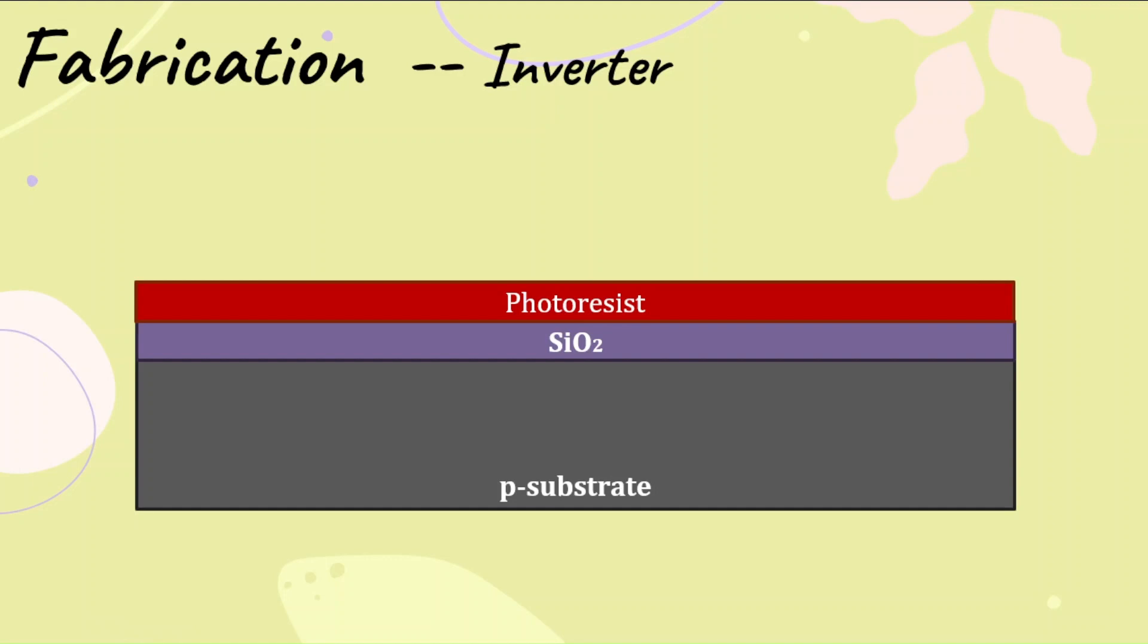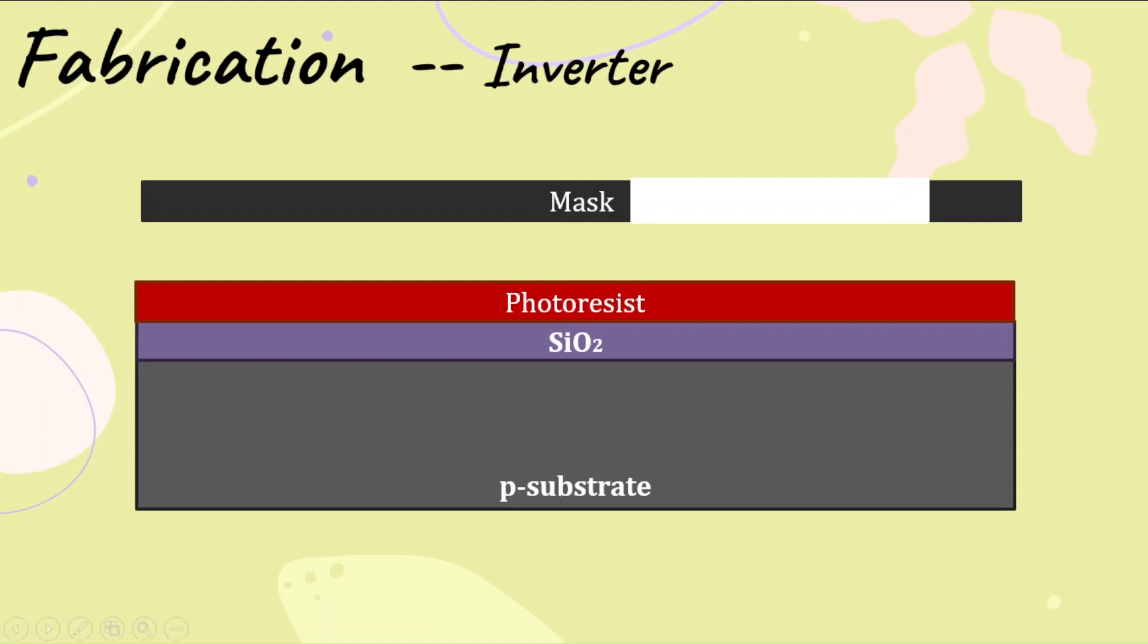We know that there are six different masks in the fabrication process. The very first mask is to form the n-well process. This is the mask.